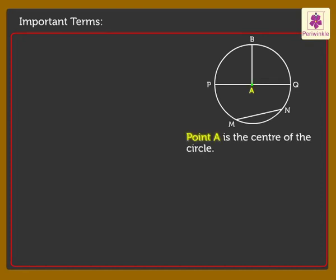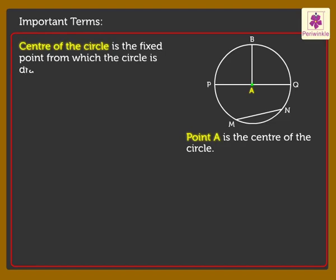Here, point A is the center of the circle. Center of the circle is the fixed point from which the circle is drawn.